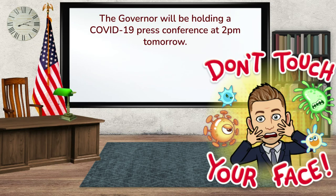The governor will be holding a COVID-19 press conference at 2 p.m. tomorrow. Where is the future continuous verb tense phrase? 'Will be holding.' This is something happening in the future we can absolutely count on, as long as the governor doesn't get sick or have something more important come up. So as long as his schedule goes as planned, we know at 2 p.m. tomorrow he will be holding a COVID-19 press conference.